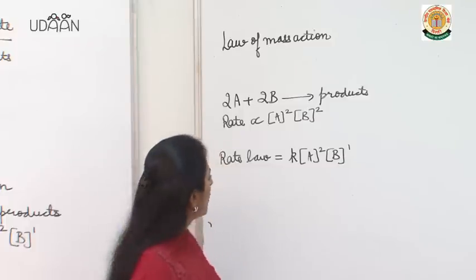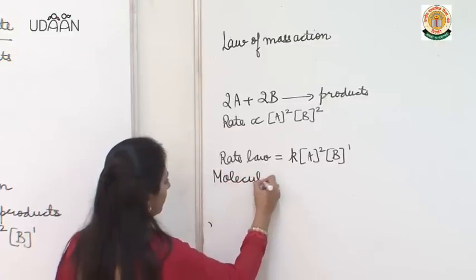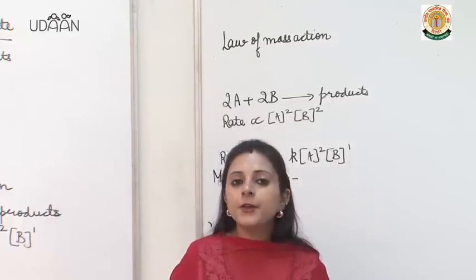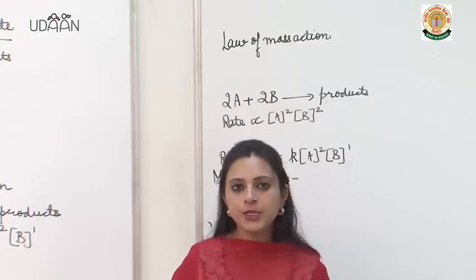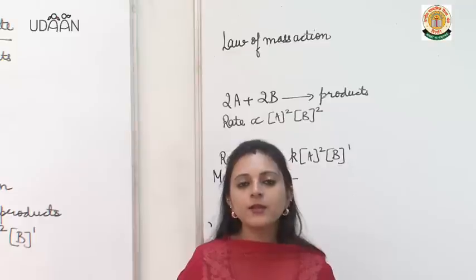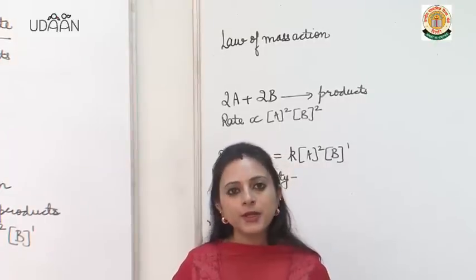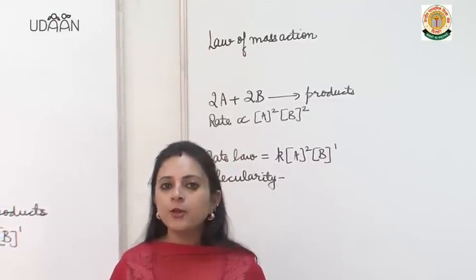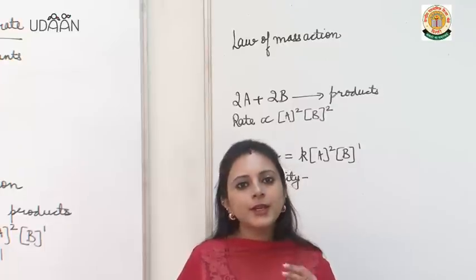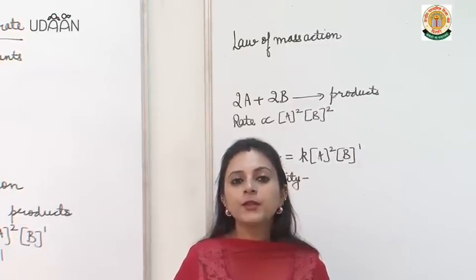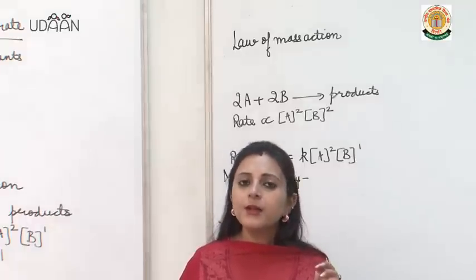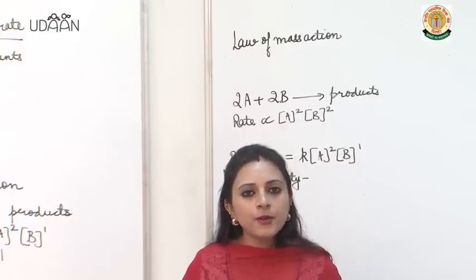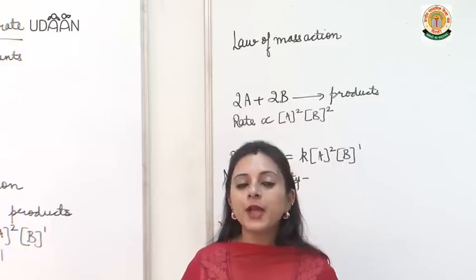Now let us understand what is molecularity. The total number of species — atoms, ions or molecules — which are colliding with one another simultaneously so that the reaction takes place is known as molecularity. We can predict molecularity of any reaction just by looking at it — we add up the total number of reactants reacting. Reactions with molecularity greater than 3 are not known and are very rare.